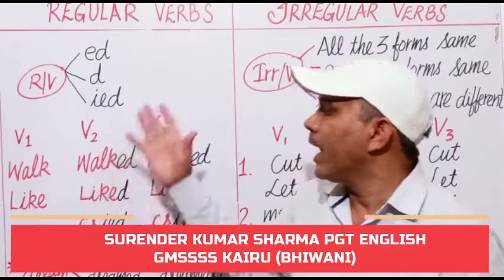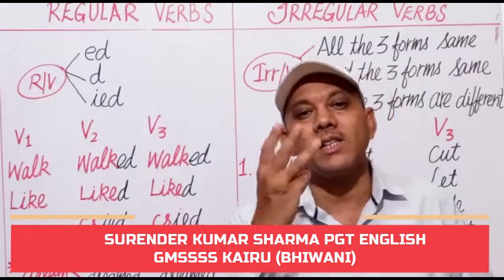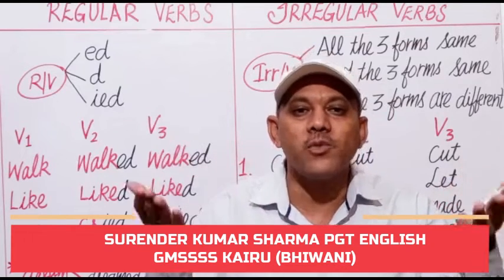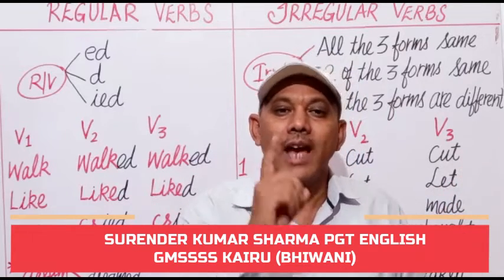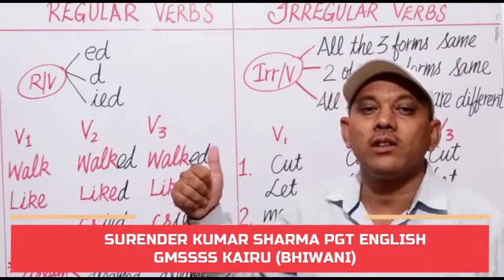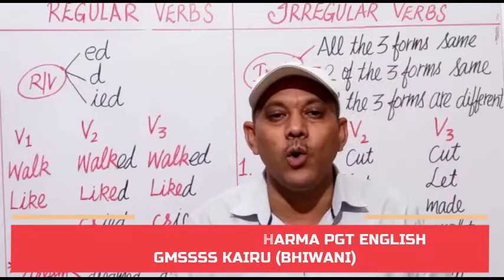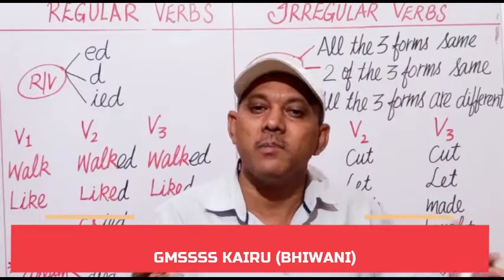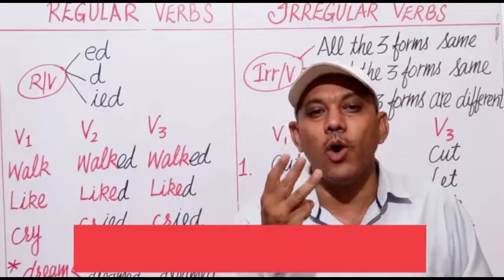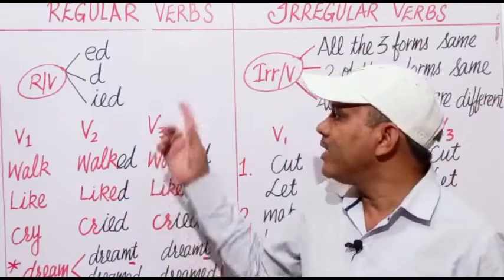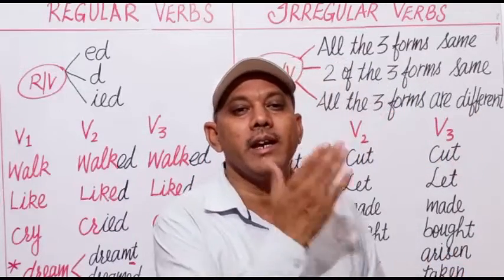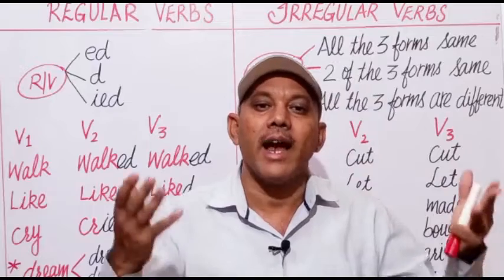As you know, a verb has three basic forms. The first form is known as the base form of a verb. The second form is known as the past tense verb, and the third form of the verb is known as the past participle. We have three basic forms of every verb, and we use these forms in different tenses and situations.